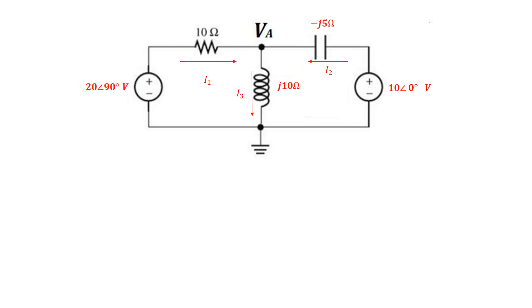So now it's a matter of applying Kirchhoff's current law at node A, where it says I1 and I2 are the node currents coming in, and those must equal the total current going out, which is I3. So we can write this as I1 plus I2 equals I3. Now I1 flows from 20 angle 90 degrees to VA through the 10 ohm. So we can write that as 20 angle 90 minus VA divided by the 10 ohm.